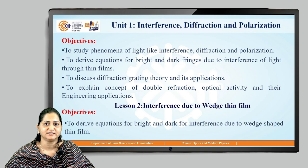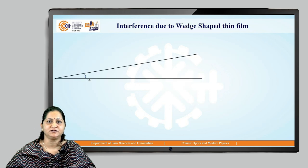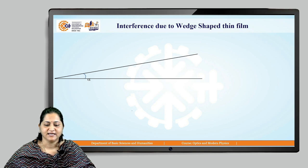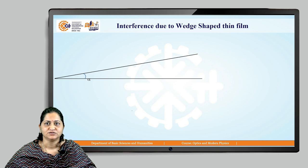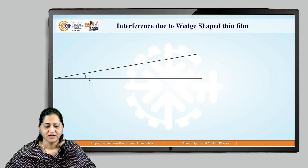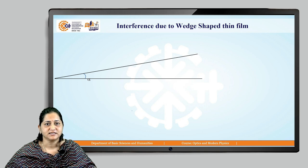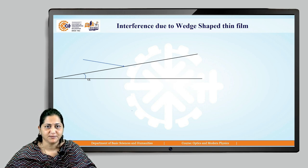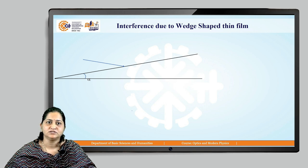In this video we will derive the equations for bright and dark fringes for interference due to wedge-shaped thin film. A wedge-shaped thin film has thickness zero at one end, and the thickness increases toward the other end. The wedge angle is given by alpha. Let's consider a ray AB incident on this wedge-shaped thin film.